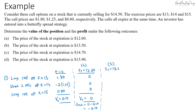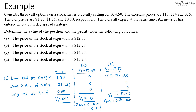In scenario B, the spot price is $13.50, which is slightly above the first long call's strike price of $13. The long call at $13 can be exercised for a payoff of $0.50. The other two options cannot be exercised. So the value at expiration is $0.50, and the gain is $0.50 minus $0.10 initial premium, giving a gain of $0.40.